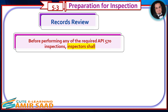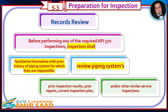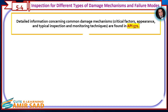Records Review: Before performing any of the required API 570 inspections, inspectors shall familiarize themselves with the prior history of the piping system for which they are responsible. They should review the piping system's prior inspection results, prior repairs, current inspection plan, and/or other similar service inspections. Detailed information concerning common damage mechanisms, critical factors, appearance, and typical inspection and monitoring techniques are found in API 571.